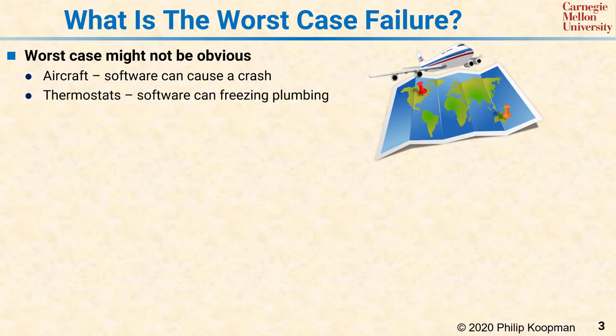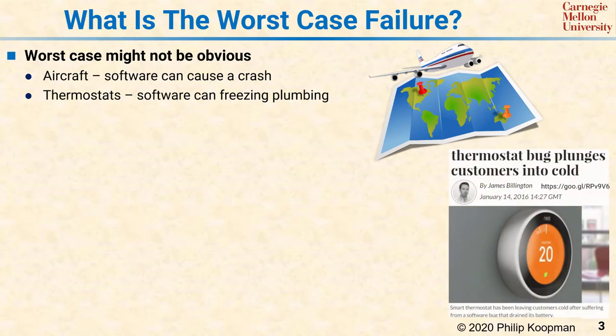A malfunctioning thermostat might cause extremely high utility bills if it consistently overheats or overcools the house, especially if nobody's home. Perhaps worse, a thermostat can stop working because of a software defect and result in damage to the house. For example, in January 2016, smart thermostats lost their battery power because of a software bug and, as the headline says, plunged the customers into the cold. If those customers were in a northern climate and left town in the middle of January, that failure could result in frozen pipes and potentially thousands of dollars in water damage and flooding from broken pipes.